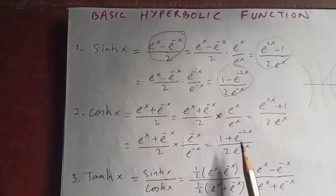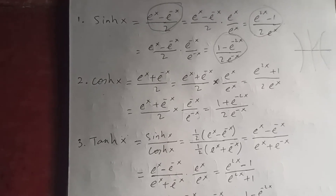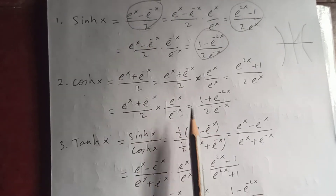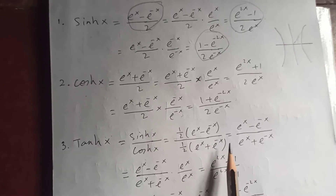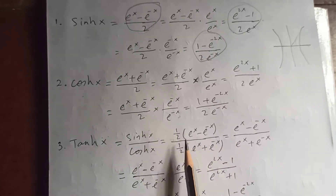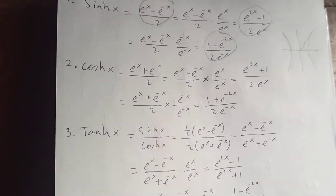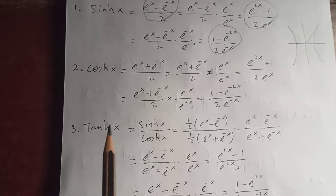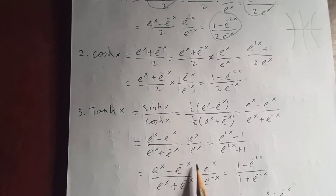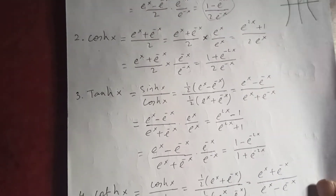Tanh hyperbolic is simply sinh divided by cosh — sinh(x) upon cosh(x). Sinh is (e to the x minus e to the negative x) over 2, and cosh is (e to the x plus e to the negative x) over 2, so the halves cancel giving (e to the x minus e to the negative x) upon (e to the x plus e to the negative x). Multiplying numerator and denominator by e to the x or e to the negative x gives further equivalent forms.